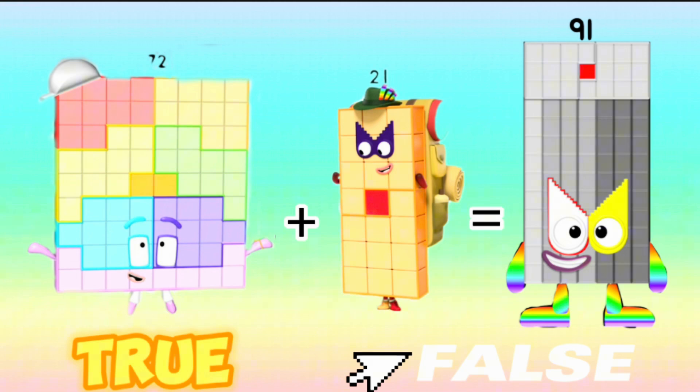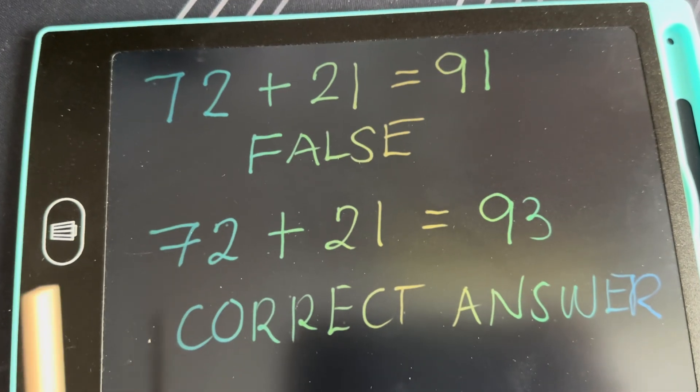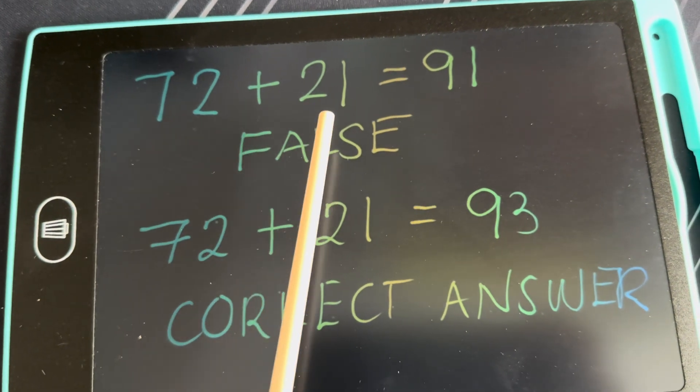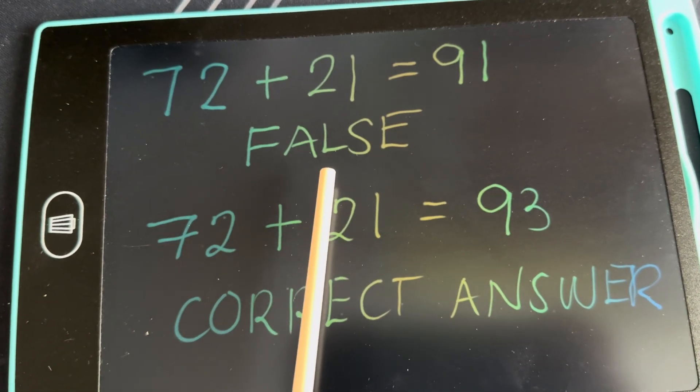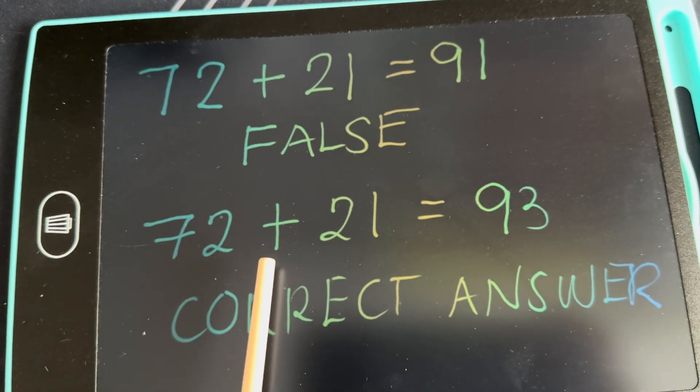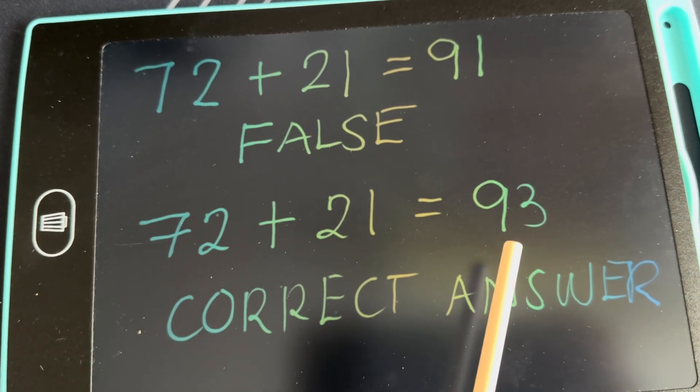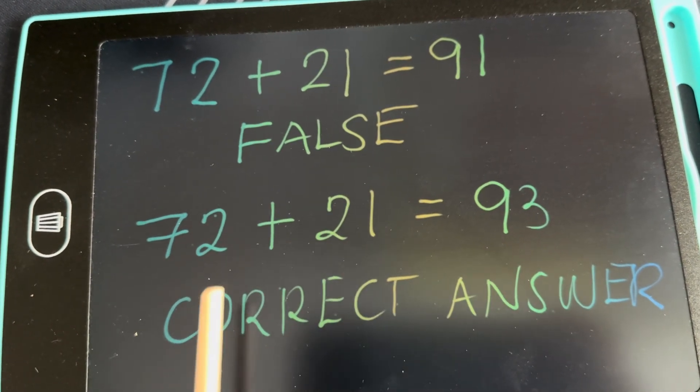72 plus 21 is not equal to 91. Let's check it out. 72 plus 21 is not equals to 91. Therefore, it's false. 72 plus 21 equals to 93. And that's the correct answer.